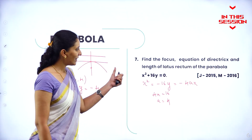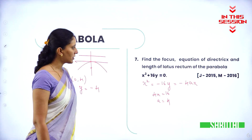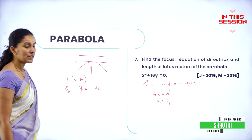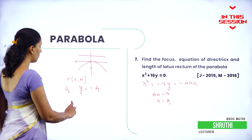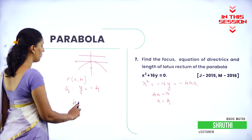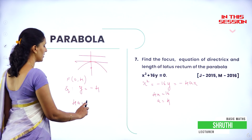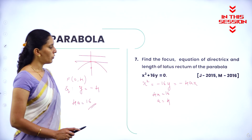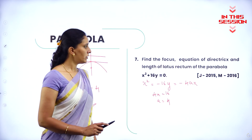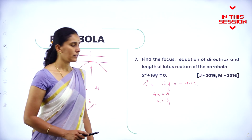So what about the length of latus rectum here? It is equal to 4a. So therefore, the length of latus rectum is 16. We have got it already. 4a is equal to 16.